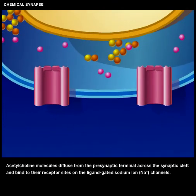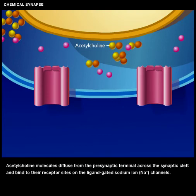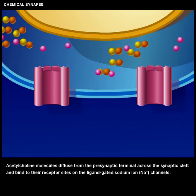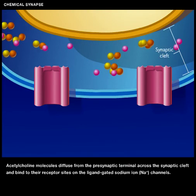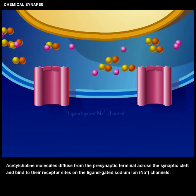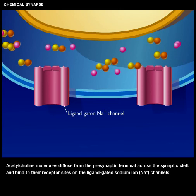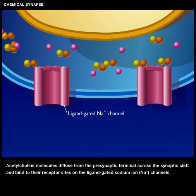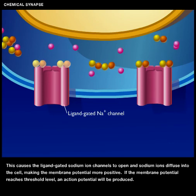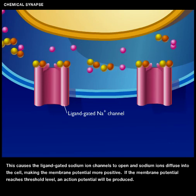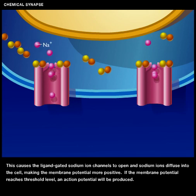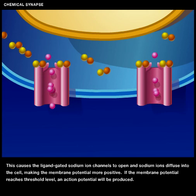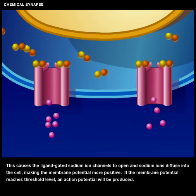Acetylcholine molecules diffuse from the presynaptic terminal across the synaptic cleft and bind to their receptor sites on the ligand-gated sodium ion channels. This causes the ligand-gated sodium ion channels to open and sodium ions diffuse into the cell, making the membrane potential more positive.